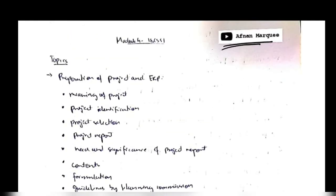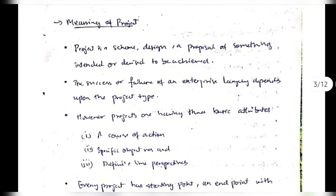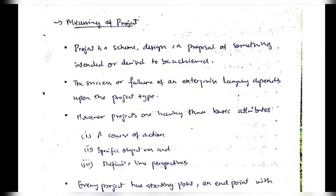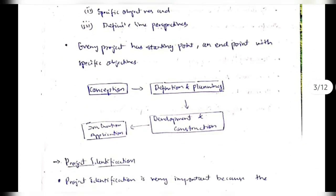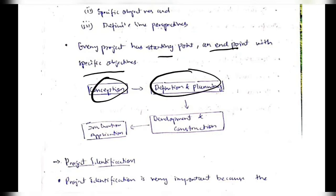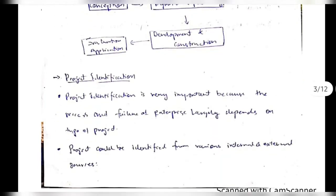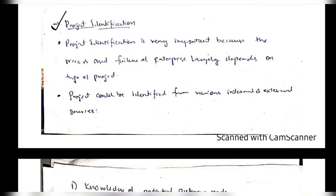So if you like this video hit the like button and don't forget to subscribe to my channel. Let's begin with the topic. The first is: what is a project? A project is a scheme or a design or a proposal of something intended or devised to be achieved. A project can be thought of as a plan. The success or failure depends on the project type. There are three attributes: the course of action, objectives, and the time perspectives. These three things should be kept in mind when designing a project. Every project has a start and end point with a specific objective — conception of the idea, then definition, development, and evaluation.